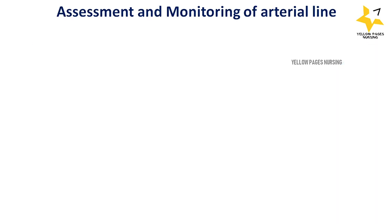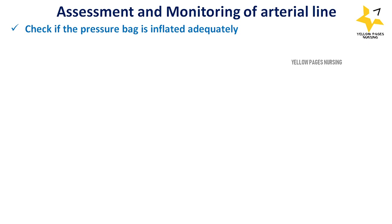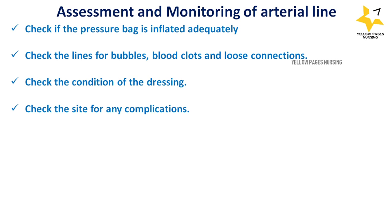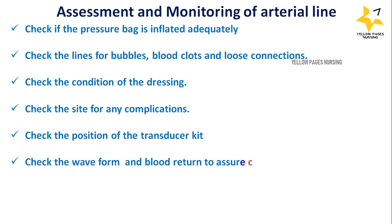For assessment and monitoring of the arterial line: check if the pressure bag is inflated adequately to 300 mmHg. Check the lines for bubbles, blood clots, and loose connections. If bubbles are present, withdraw the air bubble with a syringe before flushing to prevent air embolism. Check the condition of the dressing; change it when loose, moist, or soiled — cleanse with CHG, allow to air dry, and apply a sterile dressing. Check the site for complications and verify the transducer is at the level of the phlebostatic axis. Check the waveform and blood return to assure catheter patency.